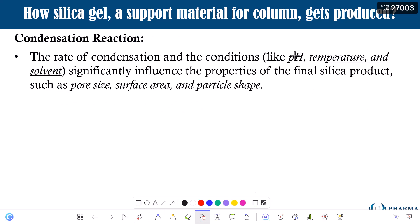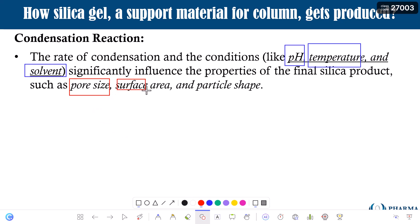Especially important are the effects of pH, temperature, and the solvent used during the condensation reaction, because these different conditions can certainly influence the rate of condensation. Very importantly, they also influence the outcome — that is, the pore size, surface area, and particle shape — which are critical characteristics for the performance of your stationary phase.